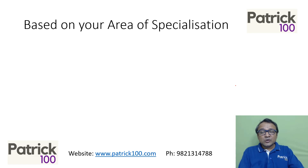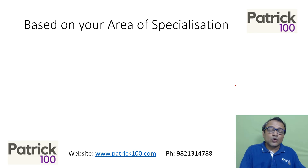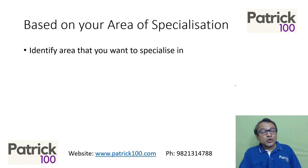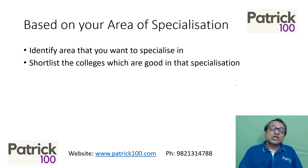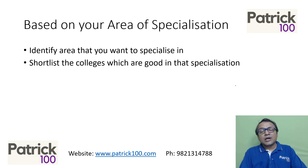Second is based on the area of specialization. If you want to do marketing, look at colleges which are good at marketing. Similarly, if you want to do finance, there are specific colleges which are good in specific areas. For example, NITIE is supposed to be good in operations, so if you're looking at operations, NITIE would be one of your best bets. Identify areas where you want to specialize, shortlist colleges that are good in those specializations. If you don't know your specialization yet, it's perfectly alright — you can skip this.